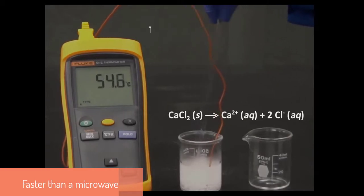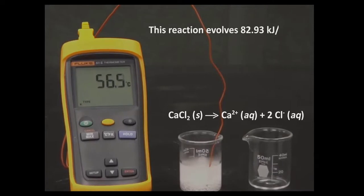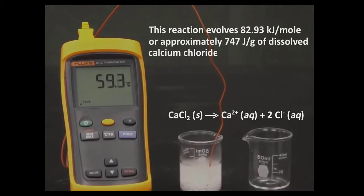Calcium chloride turning into its ions in aqueous solution. 747 joules per gram, or 82 kilojoules per mole. That's significant.